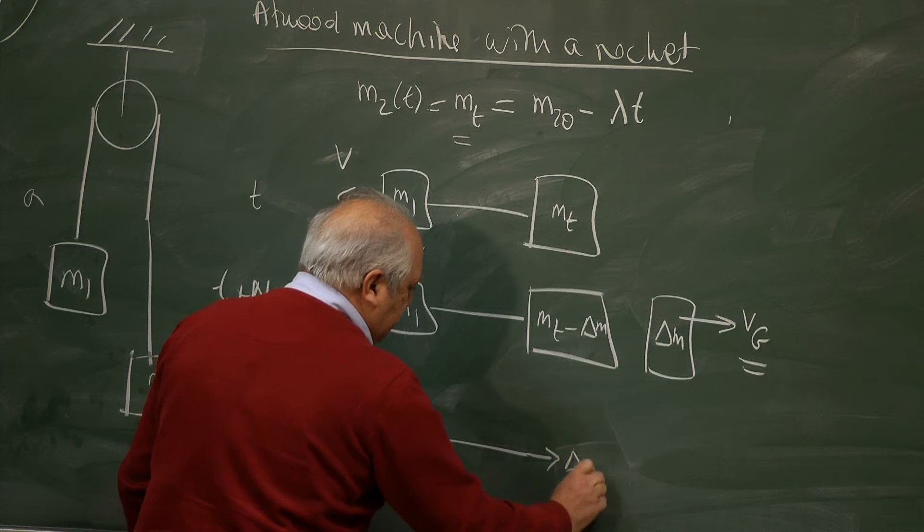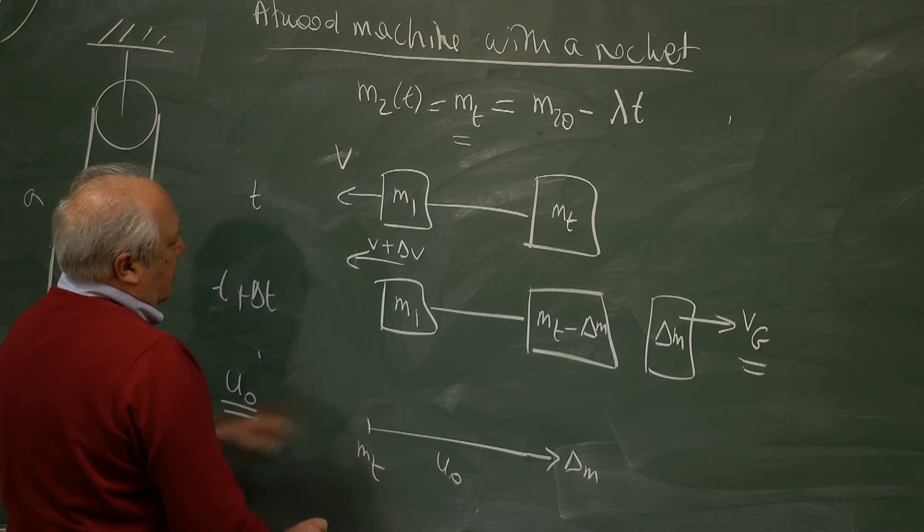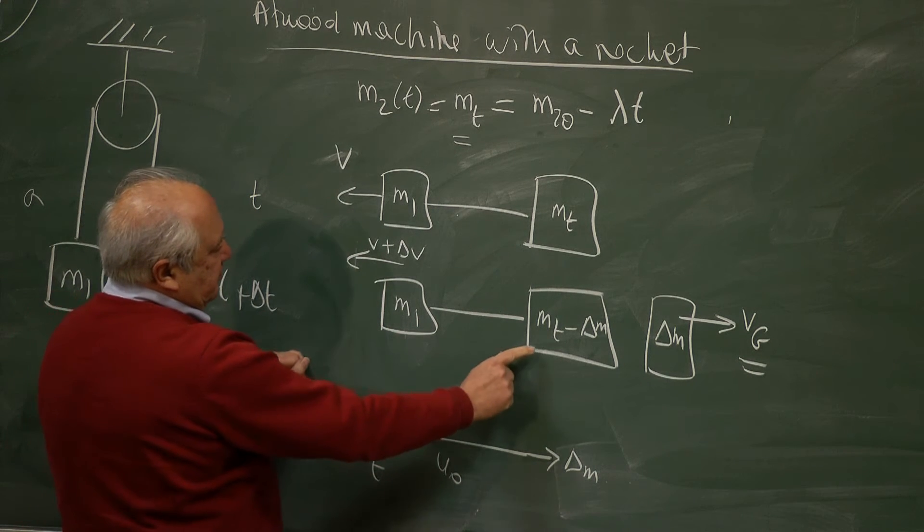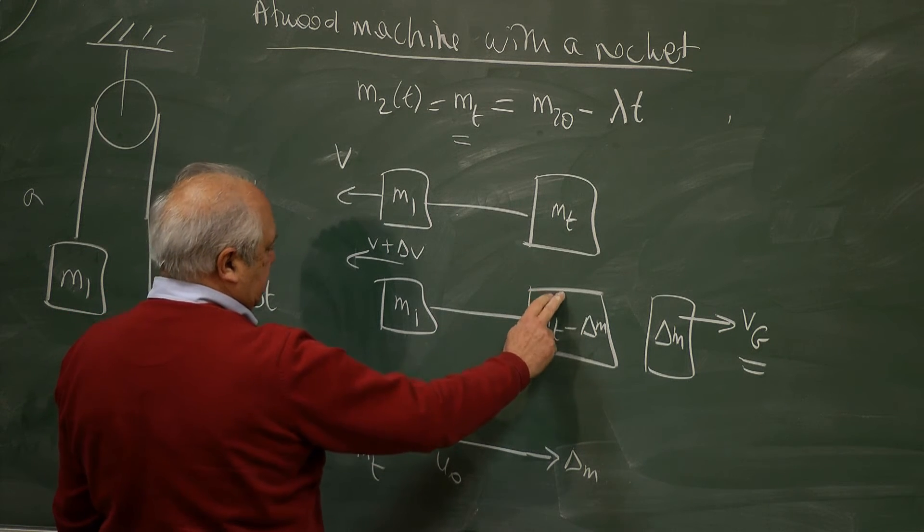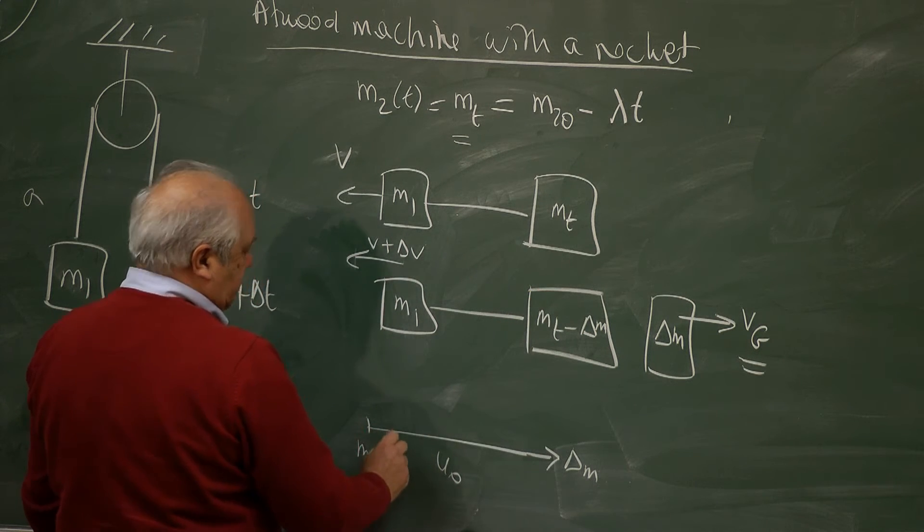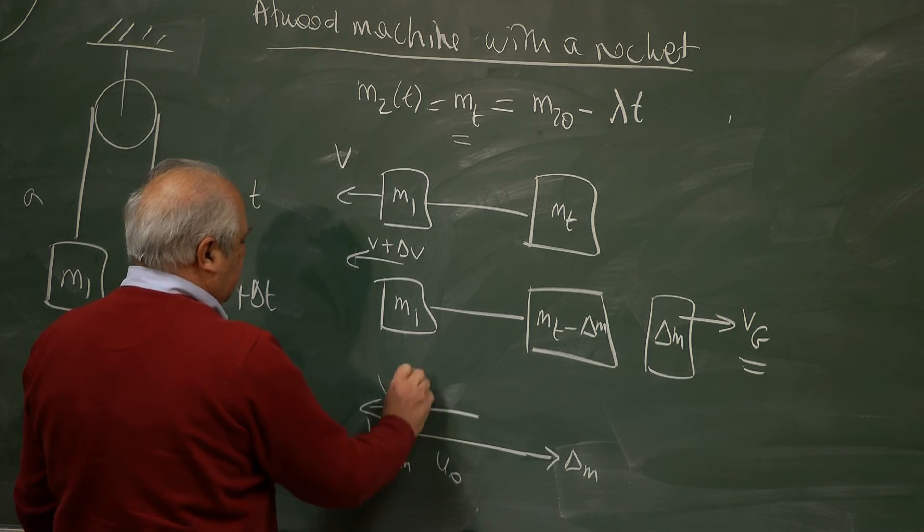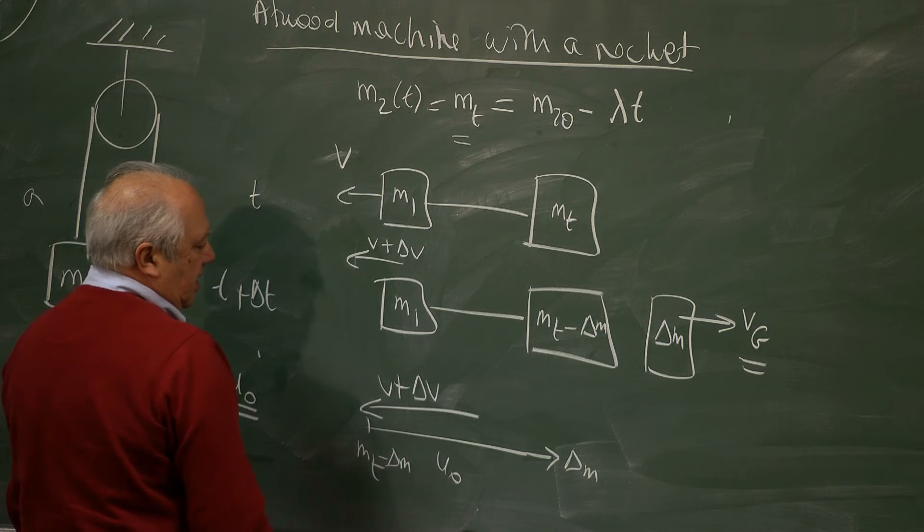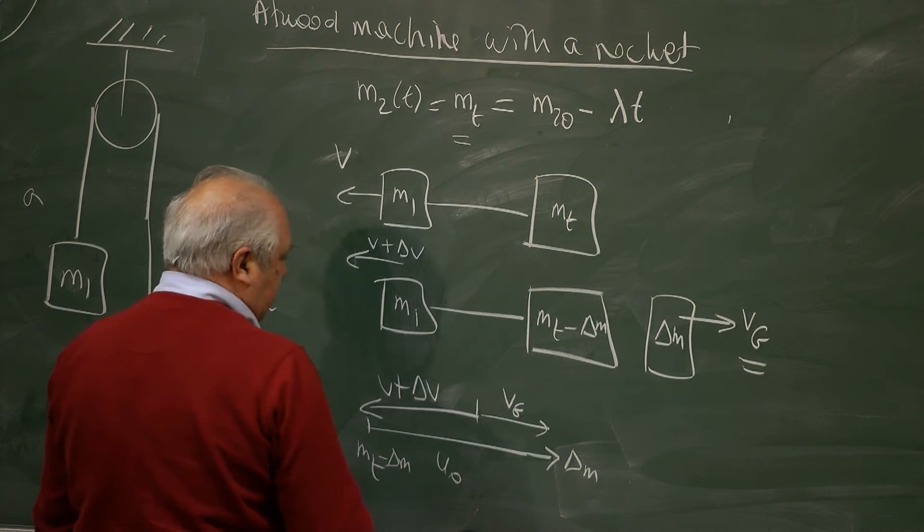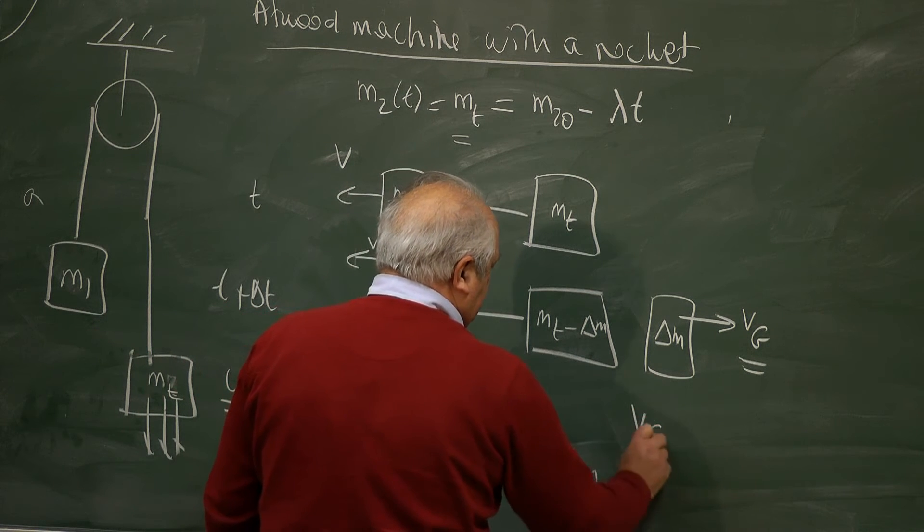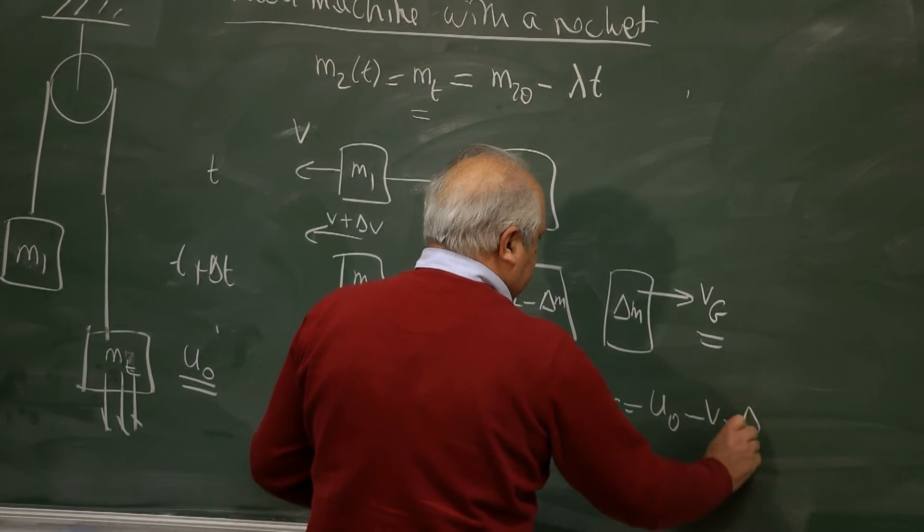The velocity of delta M with respect to MT is U zero. I gave the velocity of this part as V plus delta V. And therefore, this is Vg. Therefore, the velocity with respect to ground is U zero minus V minus delta V.